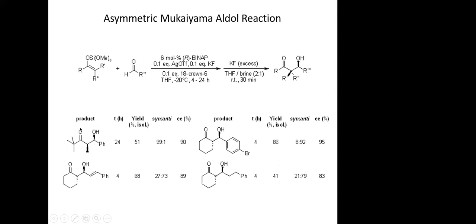Looking at the reaction scope: with benzaldehyde, 24 hours, 51 percent yield, 99 percent syn-to-anti, and 90 percent ee — excellent. With cinnamaldehyde as your aldehyde and a cyclic silyl enol ether: four hours, 68 percent yield, but the selectivity favors the anti at 73:27, and 89 percent ee — not shabby. The sin and anti diastereomers can actually be separated by flash chromatography.